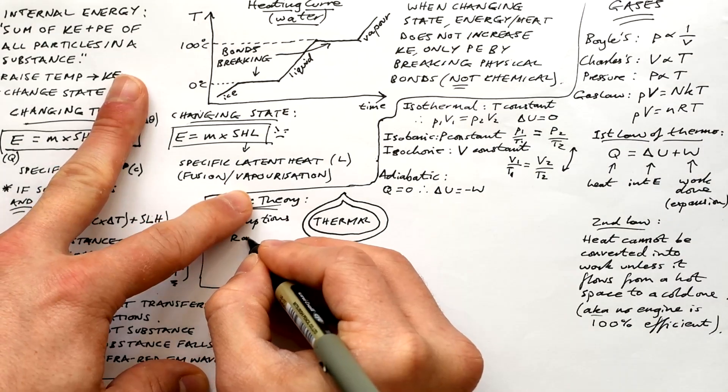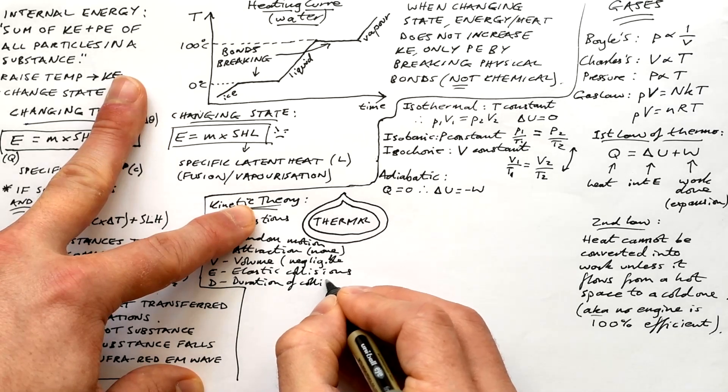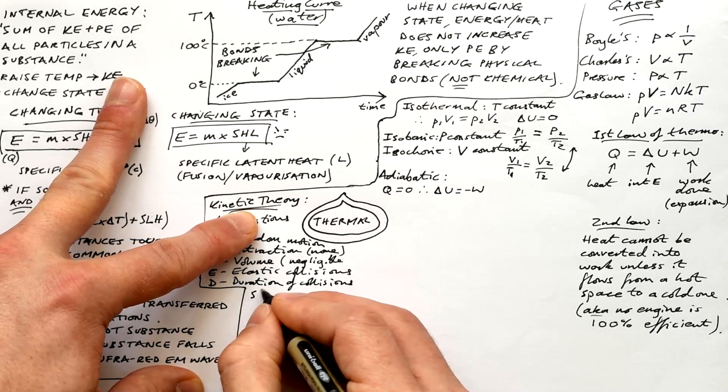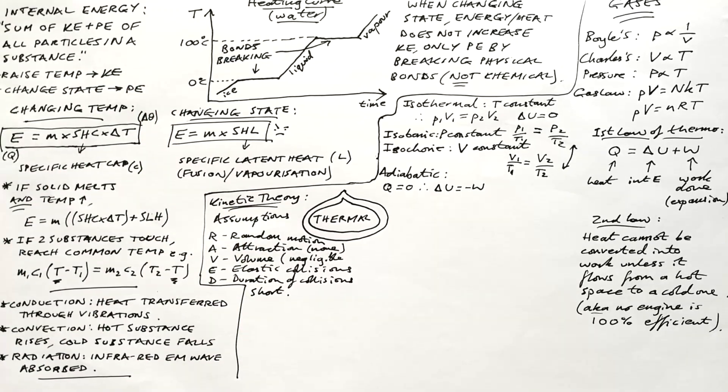Kinetic theory, there are five assumptions that we need to remember. R is random motion of particles. A is attraction. There is none. V is volume of particles is negligible. E is elastic collisions. And D, duration of collisions is negligible compared to duration between collisions.